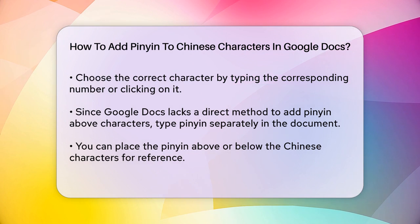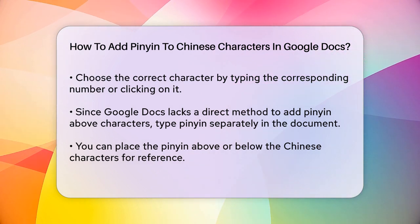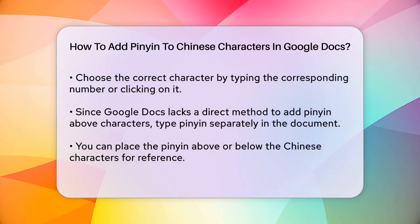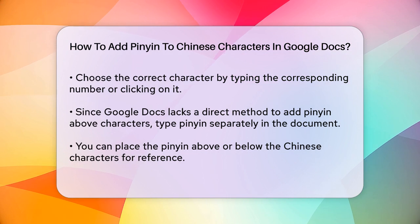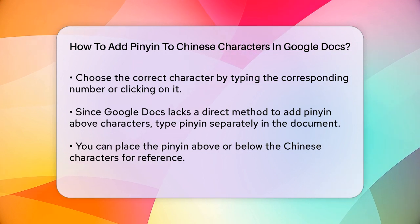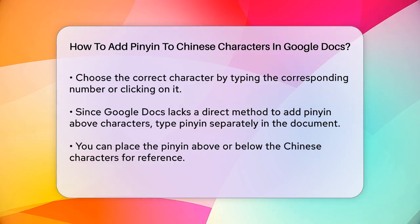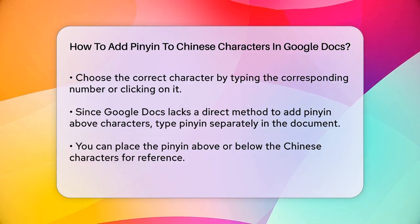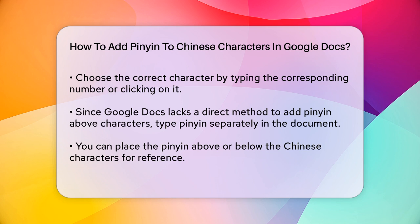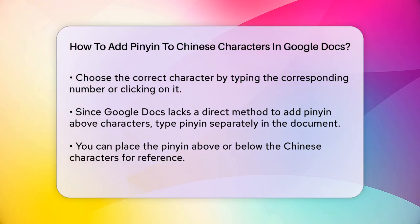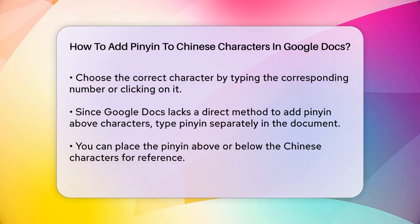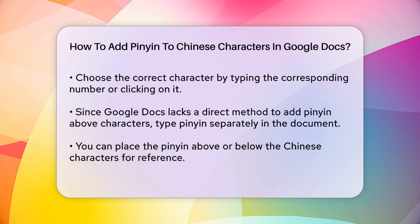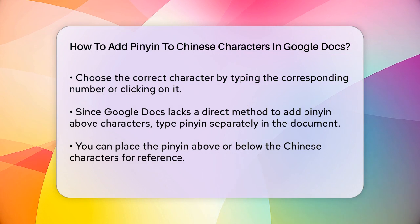If you need to include tone marks in your pinyin, you can use the Insert menu in Google Docs. Go to Insert, then Special Characters, and you can find the vowels with tone marks. For example, to type an "o" with a second tone mark, you can select it from the Special Characters list.